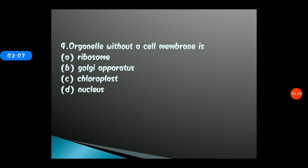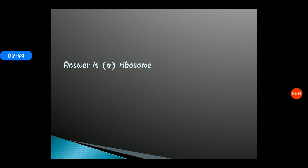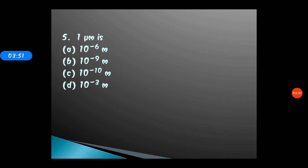Question 4: Organelle without a cell membrane is — options: A) Ribosome, B) Golgi apparatus, C) Chloroplast, D) Nucleolus. Which organelle is lacking a cell membrane? The correct answer is option A, Ribosome. The ribosome is a cell organelle that lacks a cell membrane.